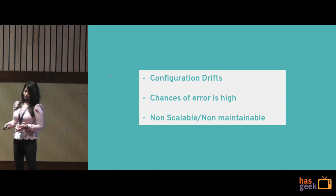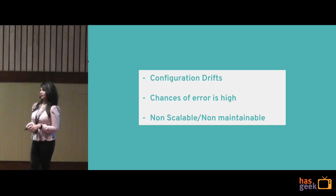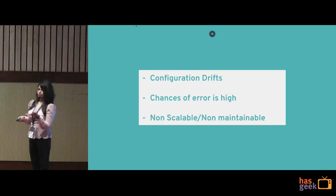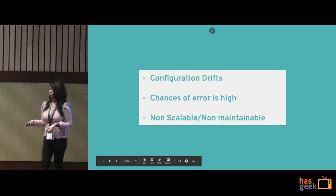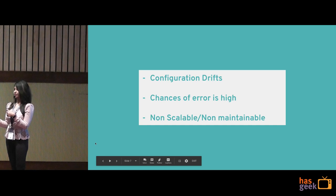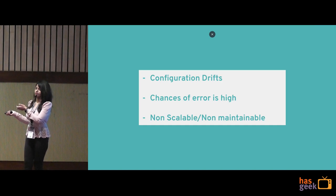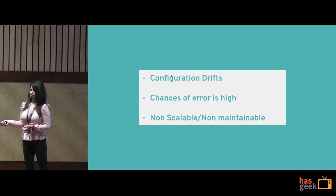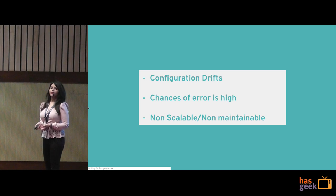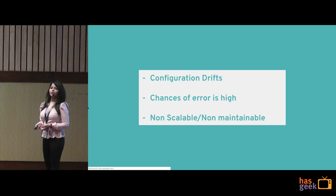Another important point is configuration drift. It means you are configuring something on a device, and at the same time someone else is doing the same thing on the same device. Say I'm configuring my router ID — each router can have only one ID — and another person is doing the same thing. Either my task or his task is going to fail, because there was no configuration state to validate whether I should proceed with setting up the router ID or not. This makes the chance of error very high. And when it comes to maintaining more than 15,000 devices, this whole workflow and practice is not at all scalable or maintainable.